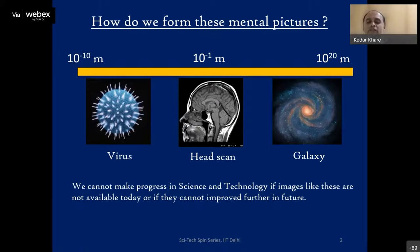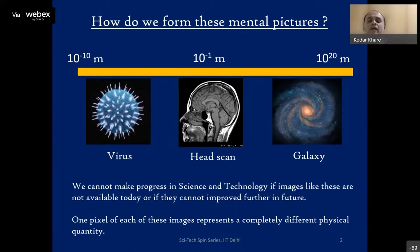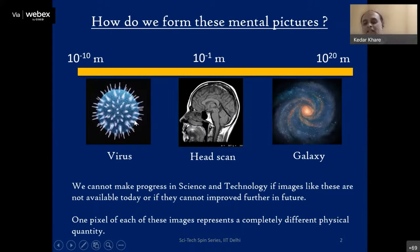If you look at one pixel of each of these pictures, the images represent completely different physical quantities. A virus is observed in an electron microscope — you send an electron beam onto it, and what you see as pixel values, color-coded, represents the Coulomb potential seen by the electron beam as it passes through the virus. For the electron waves, the virus is just like a transparent glass-like object.